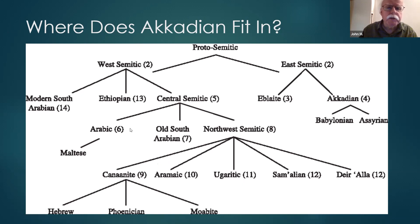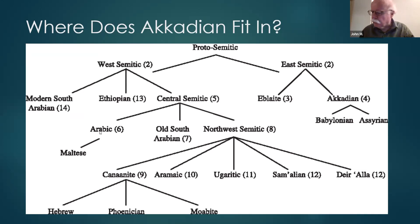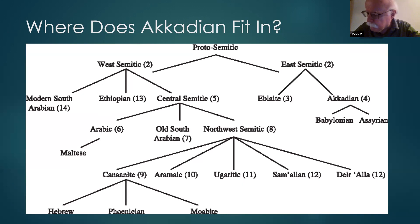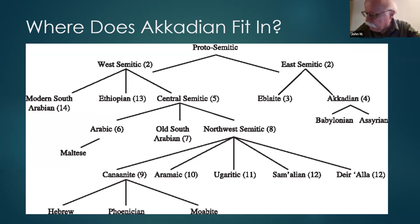Arabic is associated now with Central Semitic. It used to be associated with languages like Ethiopic, and the tree would look somewhat different. But the problem with Arabic is it's so morphologically rich — it shares features with all the other languages. Every distinctive feature in another language, Arabic has a talent for having. It's really quite remarkable.